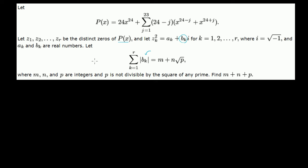In fact, I have a feeling this is going to take us multiple videos to do. So we have p(x) equal to — the first term as written is 24x to the 24th. And now let's write out the summation.